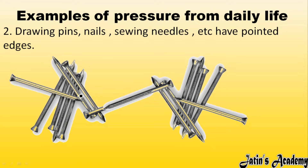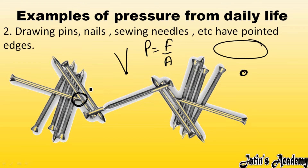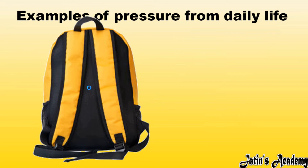Next, a similar example: drawing pins, nails, sewing needles, etc. also have pointed edges. Why do these things have pointed edges? Pointed edges mean the area is less. As we know, pressure equals force over area — if area is less, then pressure exerted on any object will be more. So drawing pins or nails can go into the wall very easily by applying force.